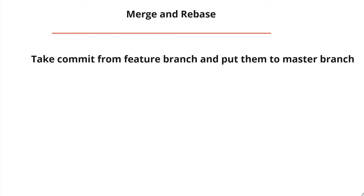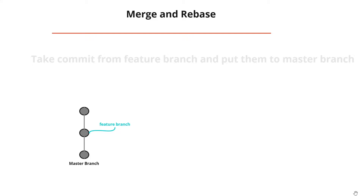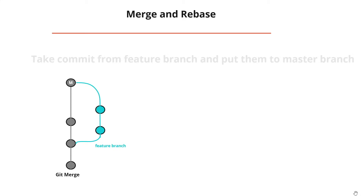The goal of both merging and rebasing is to take commits from a feature branch and put them into the master branch, or any other branch. In a normal merge, git merge takes the feature branch changes and combines them into one merge commit, then puts that merge commit into the master branch.